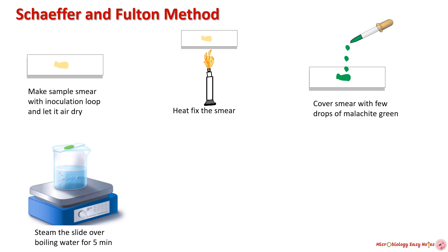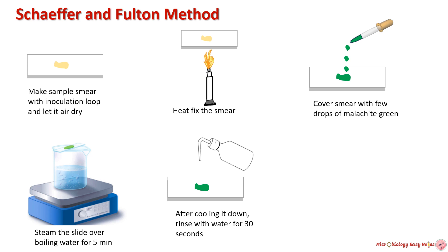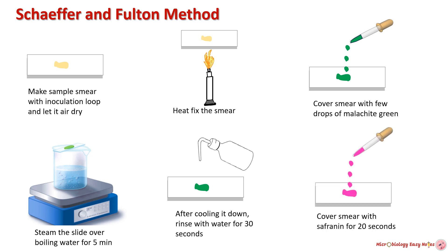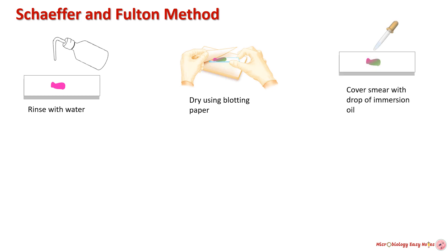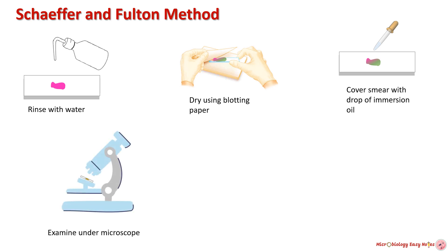After heating with malachite green, the slide is rinsed with water for 30 seconds to remove excess stain. Safranin is applied to the slide to stain any remaining vegetative cells. The slide is again washed with water to remove excess stain, then gently blot-dried using blotting paper. The smear is covered with one drop of immersion oil and examined under the microscope.